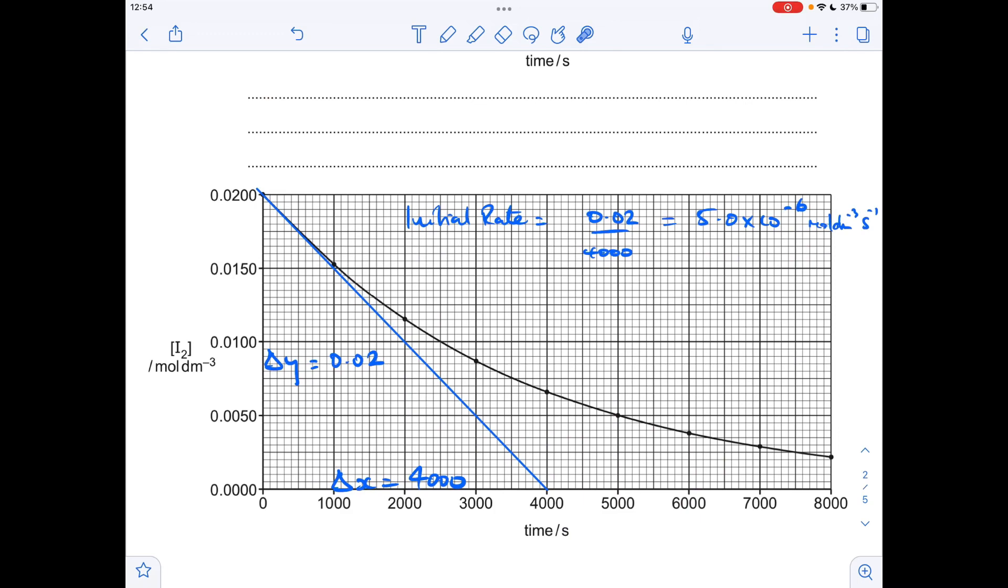Moving on to the calculation of the initial rate. So I've drawn a tangent to the curve at the start of the reaction. Worked out my change in Y. So obviously that's going to be 0.02. Change in X is 4,000 seconds. So the initial rate is the gradient of that tangent. So it's 0.02 change in Y divided by 4,000 change in X. So my answer is 5 times 10 to the minus 6 moles per decimetre cubed per second.